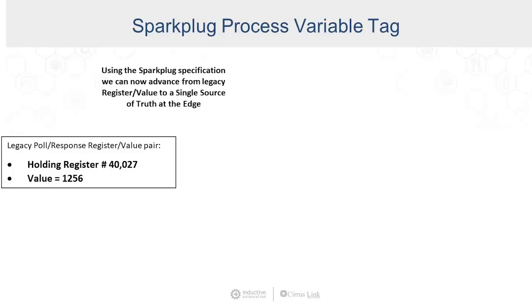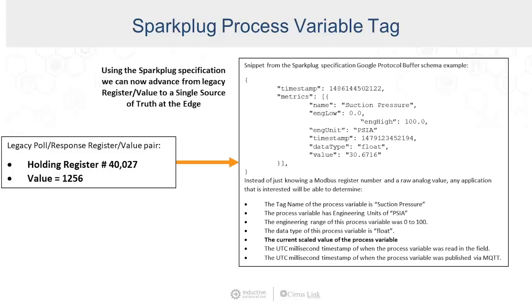But with Sparkplug, we can advance from legacy register value information to a single source of truth at the edge. Taking this same value and representing it from an edge device that implements MQTT Sparkplug, when we subscribe to this tag we actually have a tag name of suction pressure, process variable engineering units of PSIA, an engineering range of 0 to 100, and we know this process variable is a floating point. The current scaled value is published along with a UTC millisecond timestamp of when the process variable was read and published via MQTT.